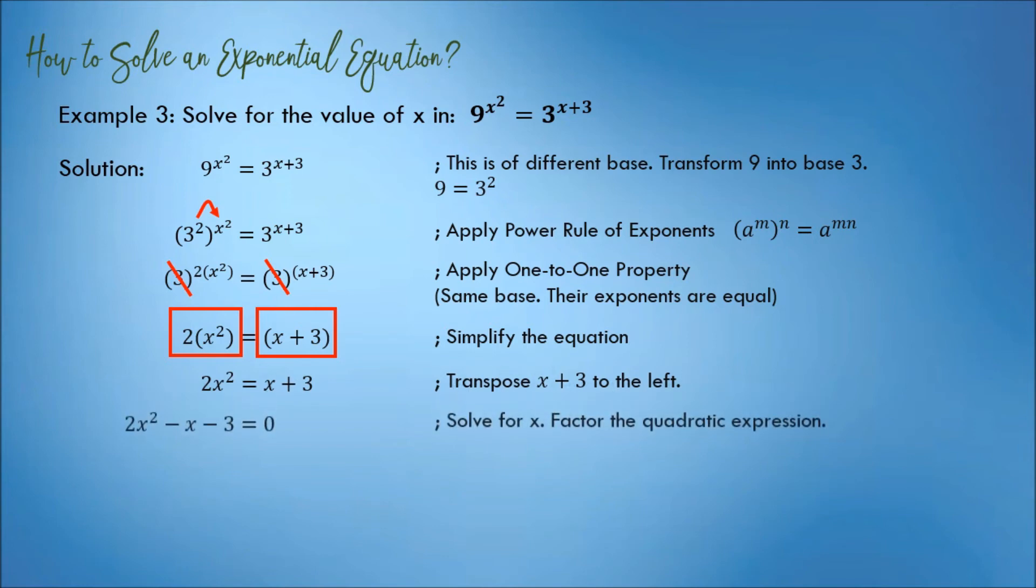The result is 2x squared minus x minus 3 equals 0. Solve for x. We can use factoring, quadratic formula, or completing the square. Factoring can be applied here.